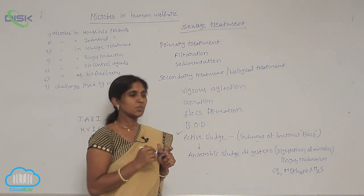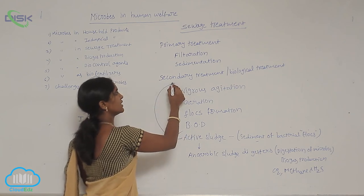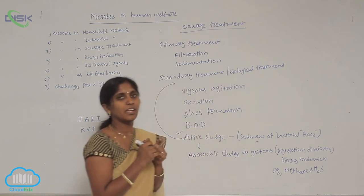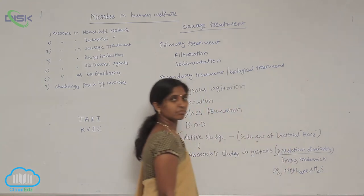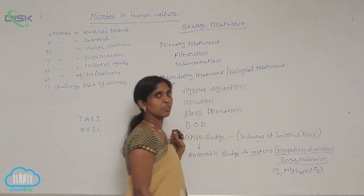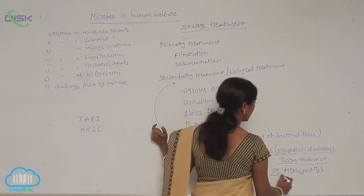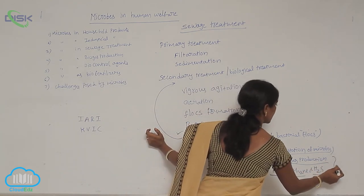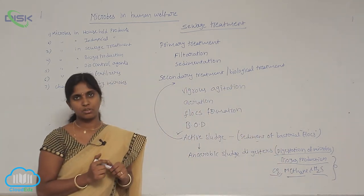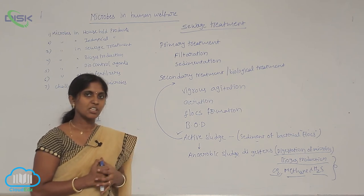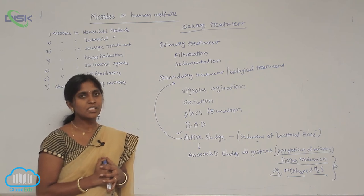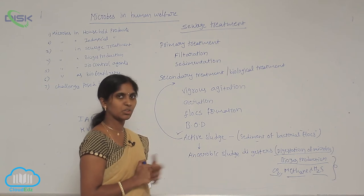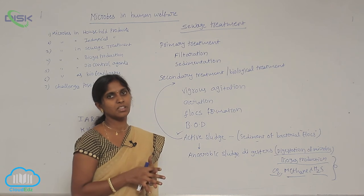In the settling tanks, bacterial flocs are separated through sedimentation. These sedimented bacterial flocs are called activated sludge. Part of the activated sludge is used again for secondary treatment. Most of the activated sludge goes into anaerobic sludge digesters, where digestion of microbes is carried out. Biogas is produced during this digestion — CO2, methane gas, and hydrogen sulfide are released as biogas. After this treatment is complete, the effluent is ready to be released into water bodies, as organic matter and pathogens are at very low concentrations.